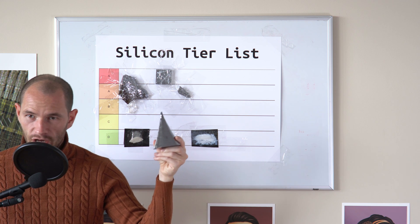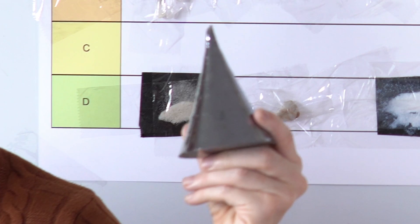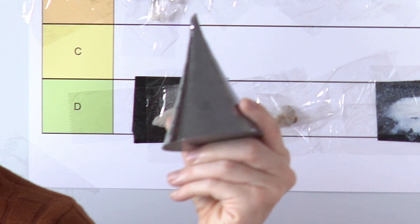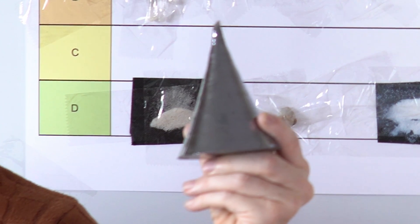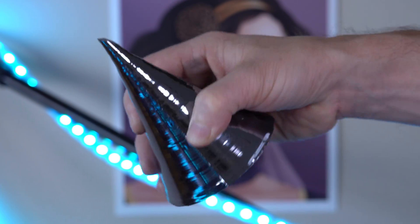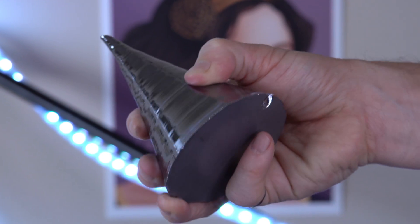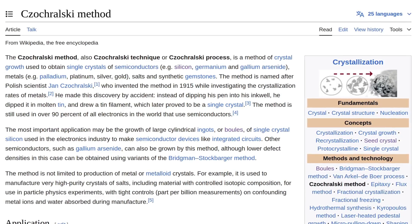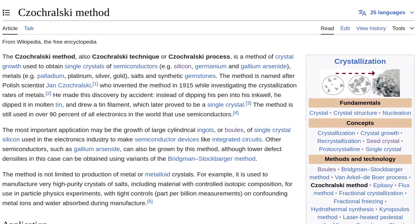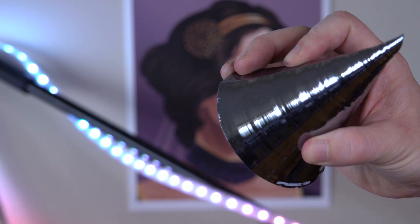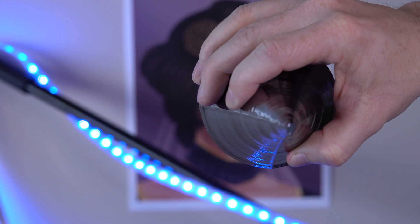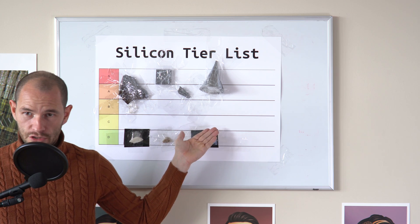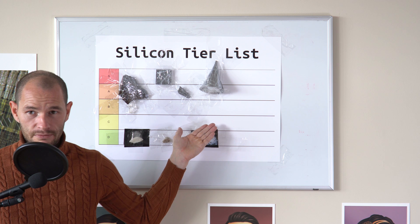Next, we have a silicon monocrystal. This is a single chunk of pure silicon with only one grain orientation. This single large chunk of silicon was grown from a single small seed crystal. This process is called the Czochralski method. Silicon monocrystals are super cool looking. For this reason, silicon monocrystals definitely belong in the S tier.